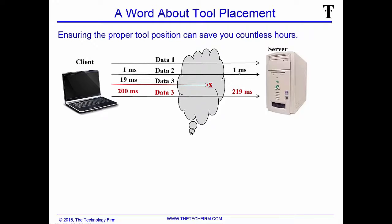On the server side we have the delta times: it was one millisecond there — and we'll assume the network had no latency, which is literally impossible, but we're just trying to illustrate a point. Then we had a 19 millisecond delta which never got through, and then a 200 — so in this case it'd be a 219 millisecond delta.